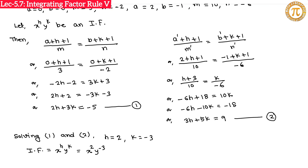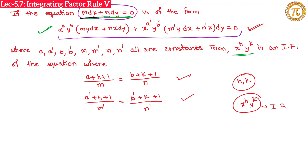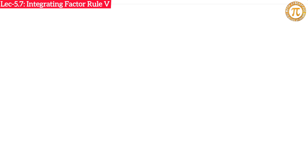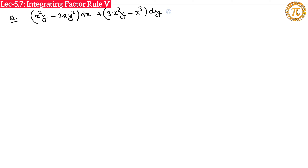To repeat the method: given M dx + N dy = 0, convert the equation into the general form, use the two equations to find h and k, then x^h y^k is the integrating factor. As an exercise, try to solve: (x²y − 2xy²) dx + (3x²y − x³) dy = 0.